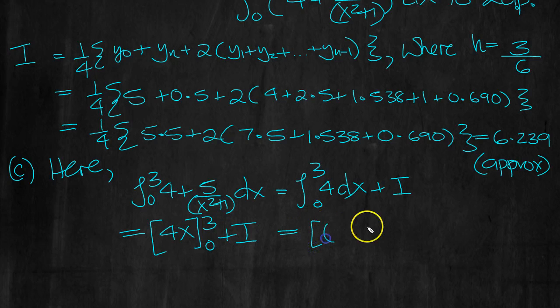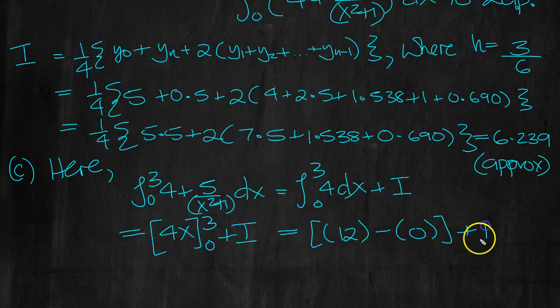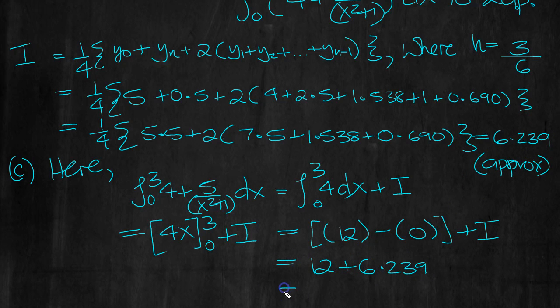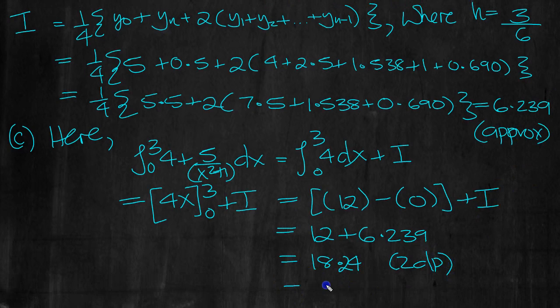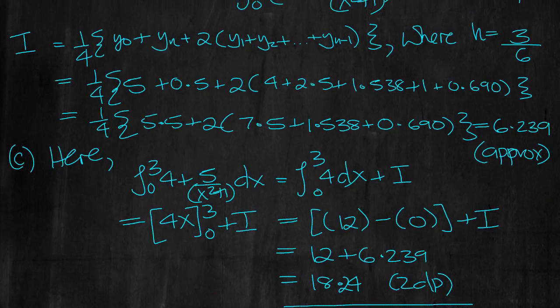4x, top value take bottom value. 4, put the top value in, is 12. Put the bottom value in, 0, is 0, plus I, which is equal to 12 plus 6.239. 18.239, so it would be 18.24, and that would be to two decimal places. That's what we needed to do.